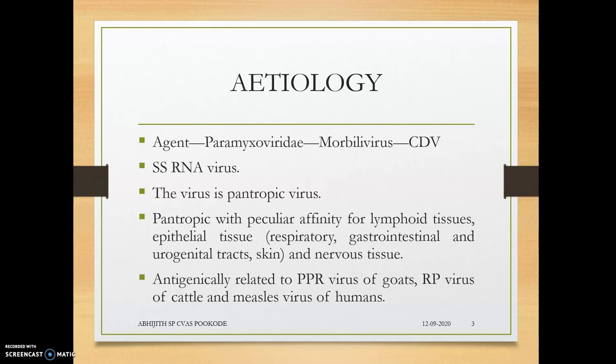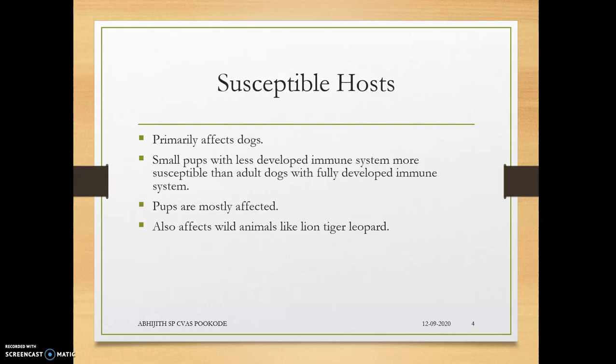Since it belongs to the family Paramyxoviridae and genus Morbillivirus, it is antigenically related to PPR virus of goats, rinderpest virus of cattle, and measles virus of humans. The susceptible hosts are primarily dogs and foxes — mainly foxes, minks, and raccoons in wildlife.